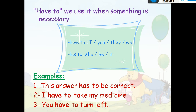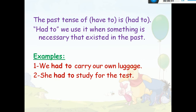The past tense of 'have to' — الماضي من have to — we talk about something necessary but in the past. For example: 'She had to study for the test.'